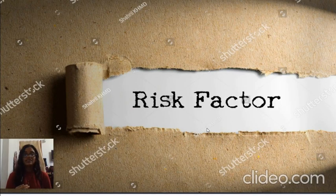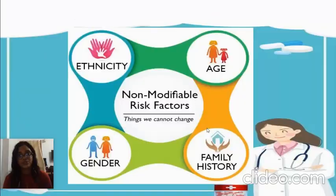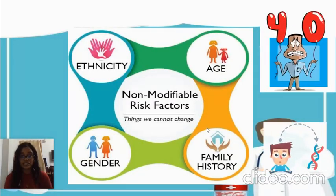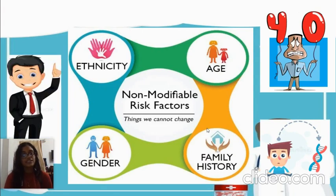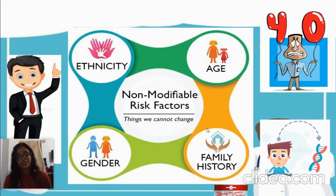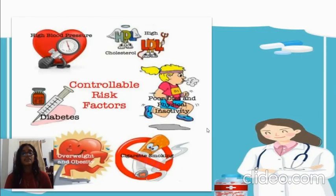Now we'll discuss the different risk factors and etiologies leading to atherosclerosis. There are non-modifiable risk factors such as age and gender. In gender, males especially those above 40 years of age have a higher risk of developing atherosclerosis than females. There are also controllable risk factors which we can modify, such as poor diet, smoking, diabetes, and high cholesterol levels.